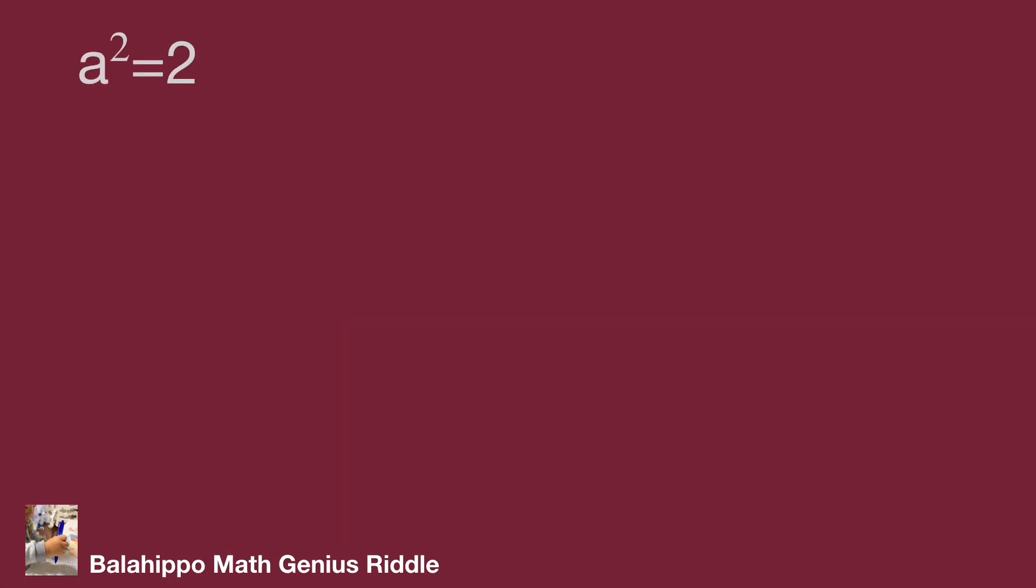Therefore a = √2 or a = -√2. We know ab = 6, so b = 6/a.